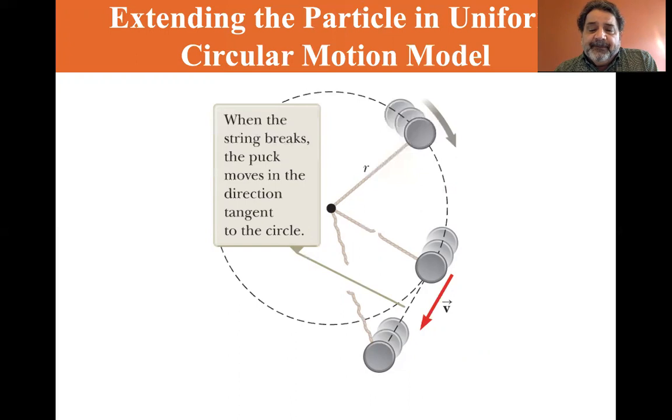You see a straight line velocity, and the puck would go in a straight line tangential to the circle, just tangent right where the string broke.